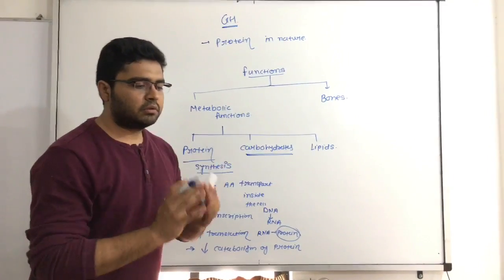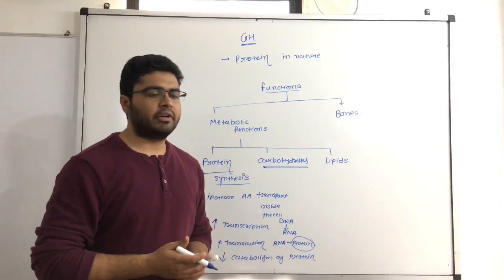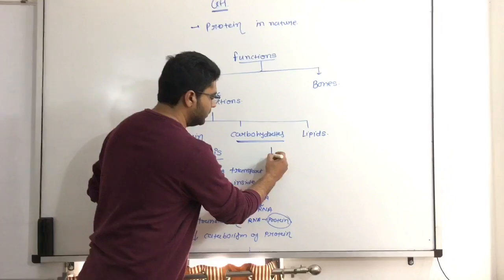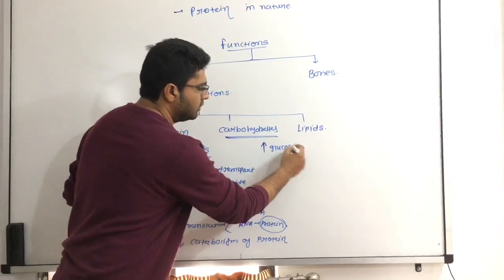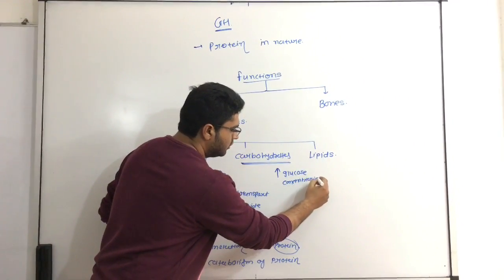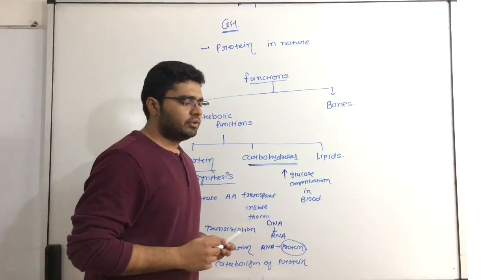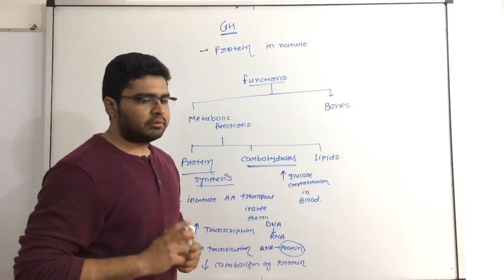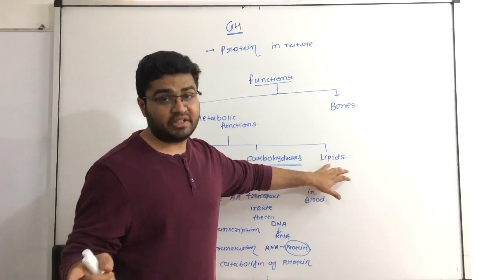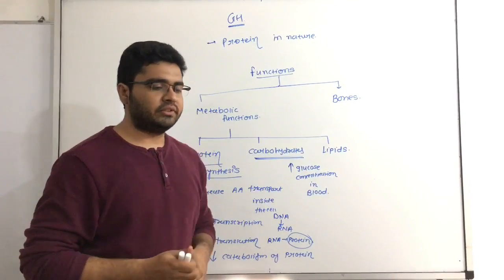Under carbohydrate metabolism, the function of growth hormone is to provide continuous energy for growth. Glucose is the main source of energy, so growth hormone increases the glucose concentration inside the blood. It promotes fat metabolism, uses fat as an energy source, performs glycolysis, and that also increases the glucose level inside the blood.